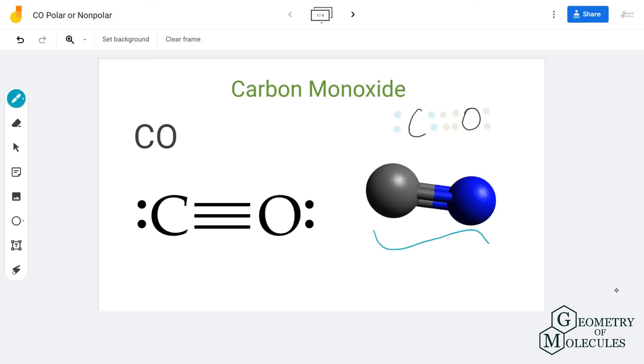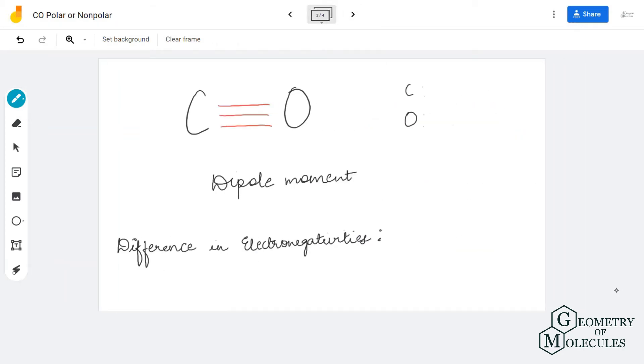So to check if the molecule is polar or non-polar, let's check the electronegativities of both these atoms.